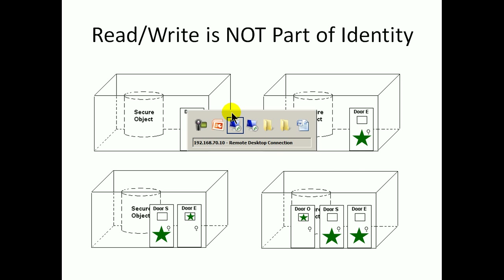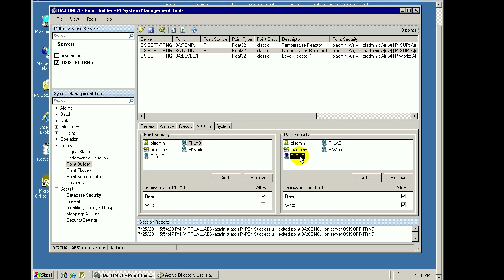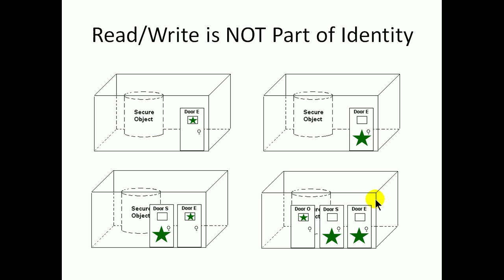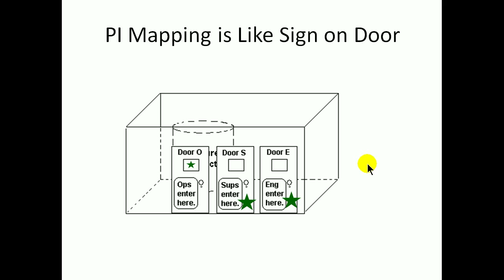So how is read vs read-write managed? Well, going back to our Point Builder, if you look at this PyLab identity, it's got read access, but when used with this secure object it's got read-write access. So you can think of this as a modifier for that door — it tells us what type of door it is. A mapping is like a sign you hang on the door. If I have access to door E, which has read-write access, I can just walk right through to the secure object. How do I know whether I have access to door E? Well, some nice person has hung a sign on that door that says, 'Engineers, enter here.' That's the equivalent of a mapping.